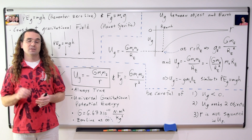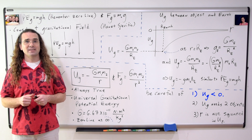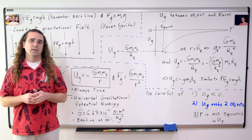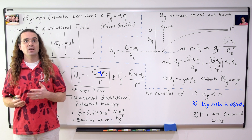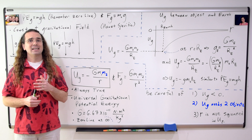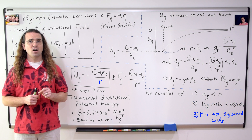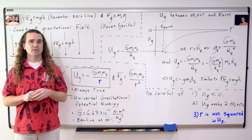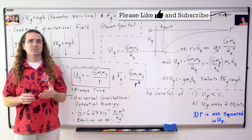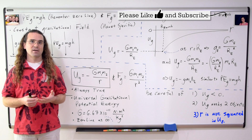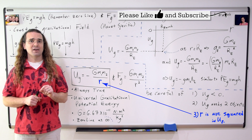Three things to be careful of. One: please do not forget the negative — it is easy to forget and sadly often is. Two: remember it requires two objects to have gravitational potential energy, object one and object two; a single object by itself cannot have gravitational potential energy. And three: the variable r is not squared in universal gravitational potential energy. R is squared in Newton's universal law of gravitation, which means students have a tendency to add a square — it is not there, so beware. Do not add a square.